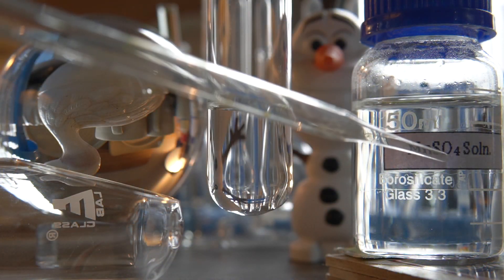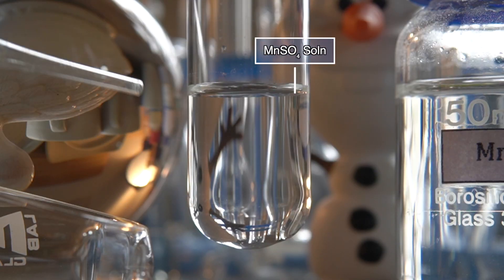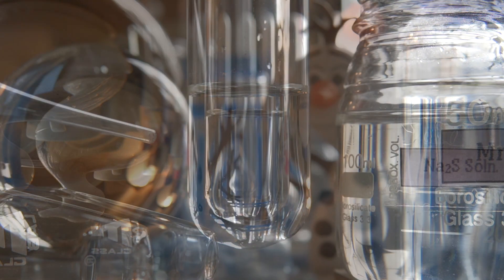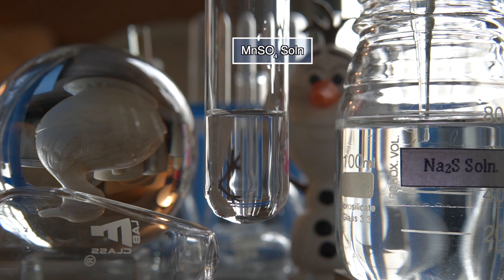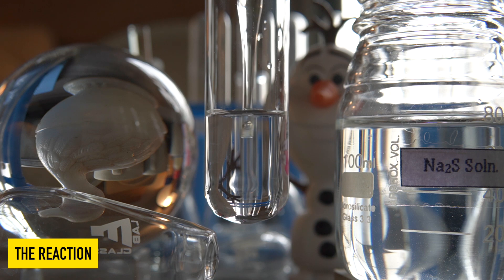Now to initiate the chemical reaction, we will take some amount of manganese sulfate into this test tube. Now we will add clear Na2S solution into the manganese sulfate solution slowly and observe the effects.